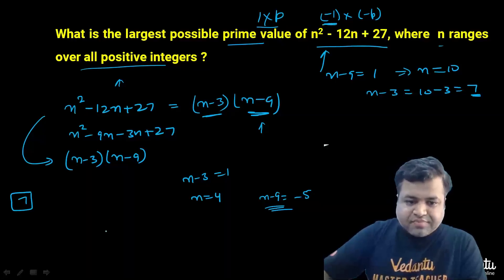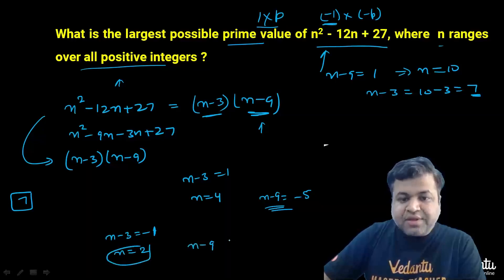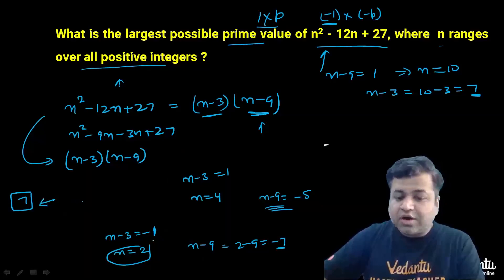Now let's see if n - 3 is -1. Then n will be nothing but 2, and in that scenario n - 9 will be 2 - 9 which is -7, and (-7) times (-1) again gives 7, which we have already taken.